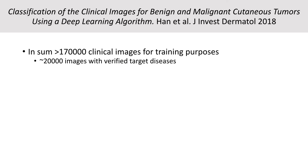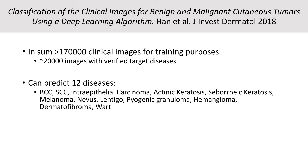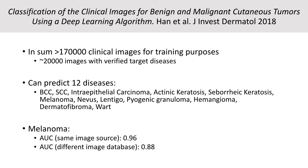If you look at a very current publication by Hahn and co-workers, they used about 170,000 clinical images for training. Their network after training was able to predict between 12 different disease classes, not just melanoma. If you look only at the melanoma performance on their test cases, it achieved an area under the curve of about 0.96 — very good. However, on test cases from a different database than their own, it decreased to 0.88, which illustrates that model performance depends very much on how diverse your training images are and how hard it is to generalize to images from other parts of the world.